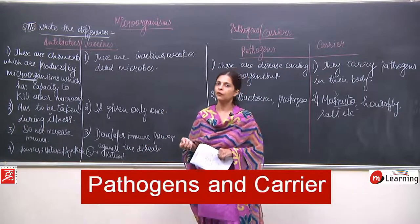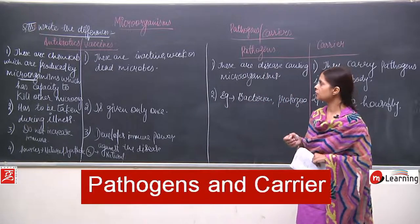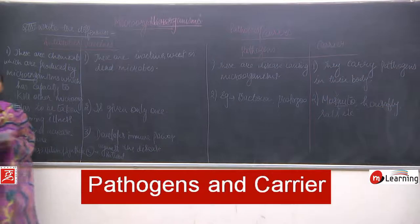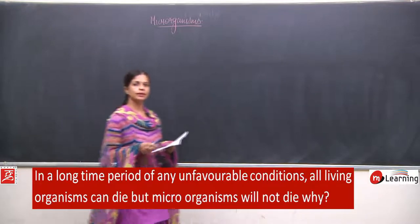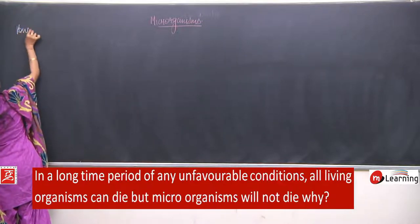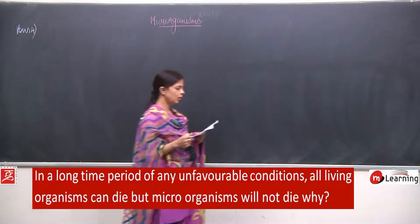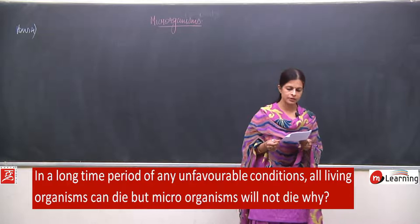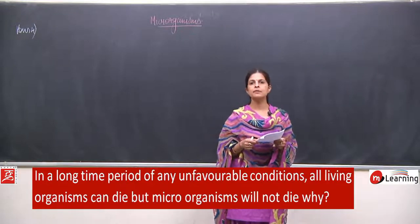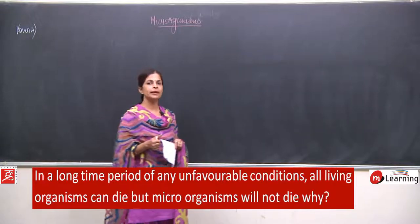These were the four differences we have discussed. Now we will move to question number four. The question is: in a long period of unfavorable conditions, all living beings can die, but microorganisms cannot — why? In any kind of unfavorable condition, which means a condition where the living organism cannot grow properly or it becomes difficult to survive.